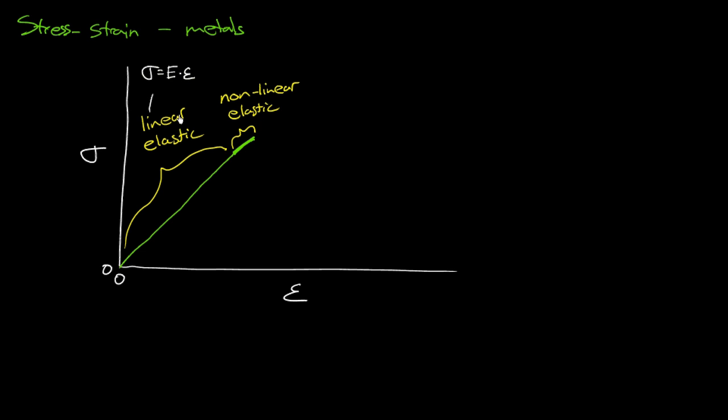And in fact, we could define, this would be a fairly simple thing to define, the threshold between linear and non-linear. And it's just a simple definition. Well, there's going to be the end of the region where it's proportional. So we would call that the proportional limit. Proportional limit. That's all that is. It's the end of the straight line.